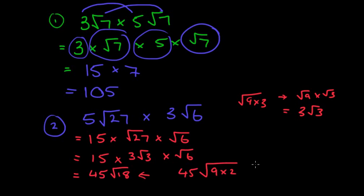And root 9 is 3. So 45 times 3 is 135 root 2. That is probably your most challenging question with multiplication.